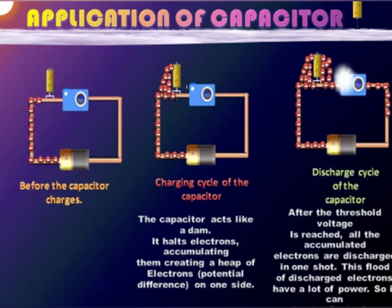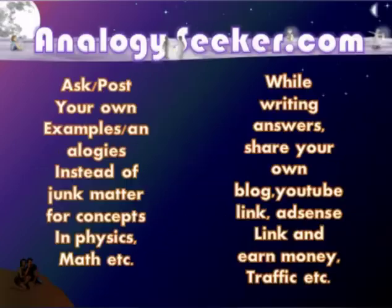This is the reason why capacitor is used in the flash of your cameras. They store electricity for some time and after a certain threshold release all of them to help the flash produce the enormous amount of light that it requires for a short time. There's a reason it's called a flash. It's a flood of electrons flowing through the filament, and this happens due to the capacitor.